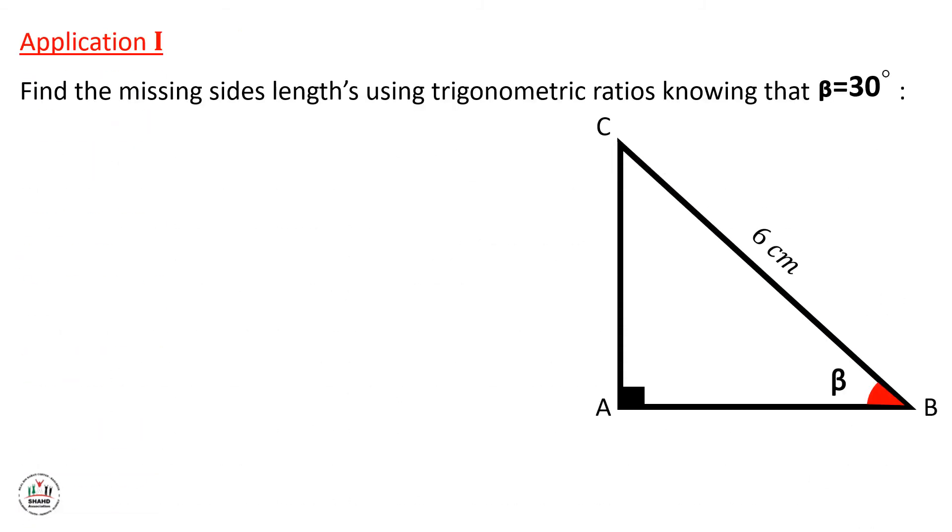Let's solve this application. We want to find the missing side lengths using trigonometric ratios, knowing that angle beta equals 30 degrees and we have the hypotenuse side of length 6 cm. So we need to find the length of AB and AC. We know cosine beta equals adjacent over hypotenuse, and the adjacent side here is side AB. So we only need to substitute the given values in the formula. So beta equals 30 and AB is unknown, and hypotenuse equals 6 cm.